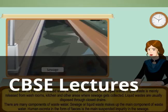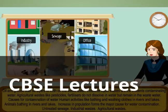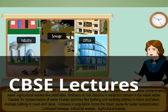Sewage or liquid waste makes up the main component of wastewater. Human excreta in the form of feces is the main suspended impurity in sewage. Oil and grease float as layers or froth on the wastewater. Industrial liquid wastes are the effluents contaminating water. Agricultural wastes like pesticides and fertilizers do not dissolve in water but remain in the wastewater.